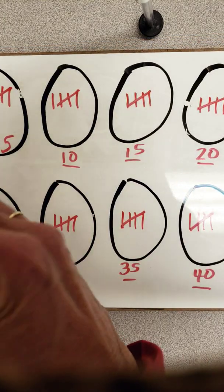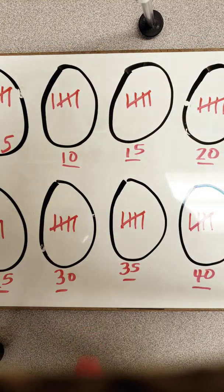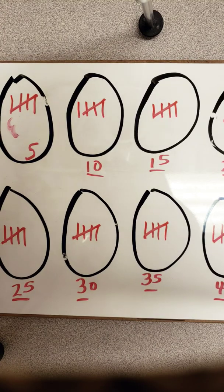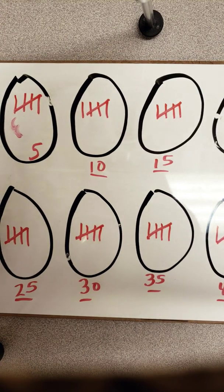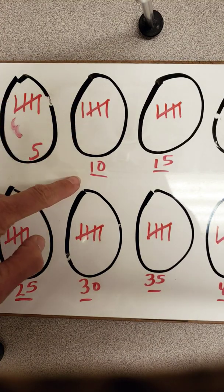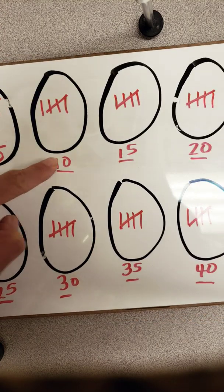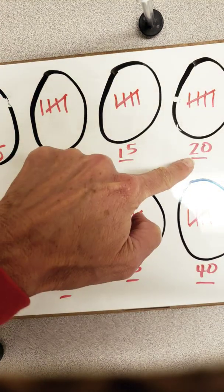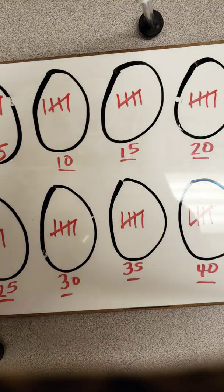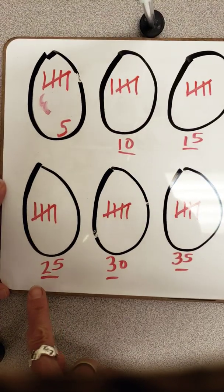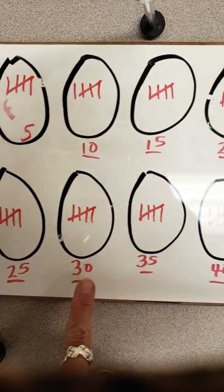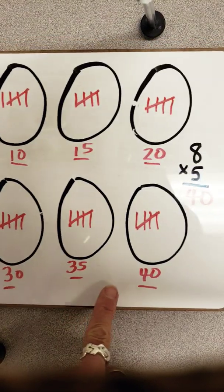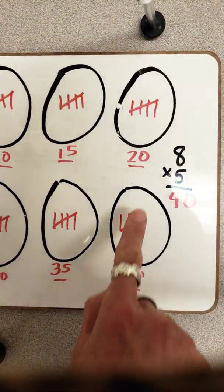And then I can count them just like I did before. In this case, you're going to see I've already got 5, and 5 more is 10, 15, 20. Then we have 25, 30, 35, and 40.